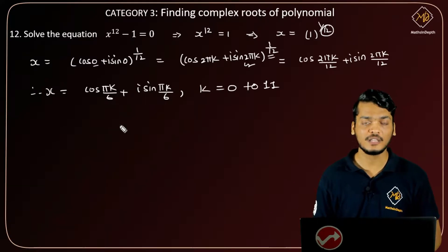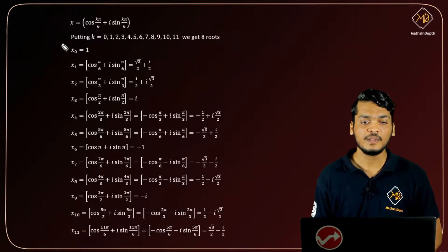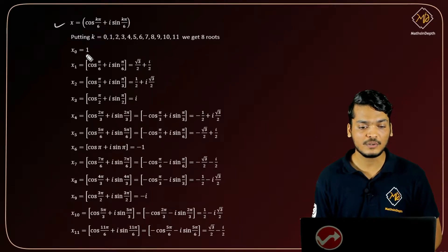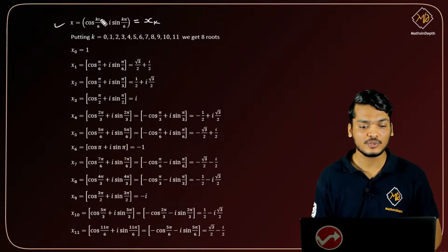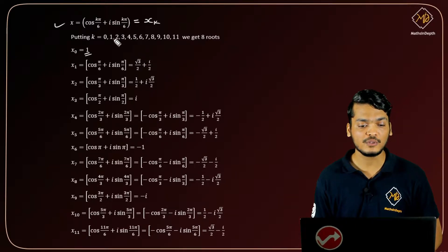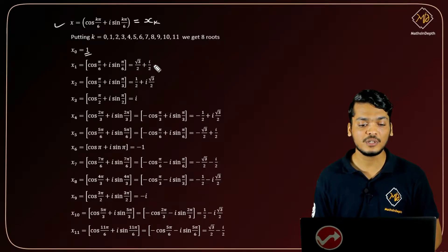So we have x = cos(kπ/6) + i·sin(kπ/6). For k = 0: we get cos(0) + i·sin(0) = 1. For k = 1: we get cos(π/6) + i·sin(π/6) = √3/2 + i/2.